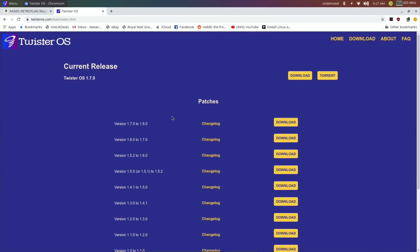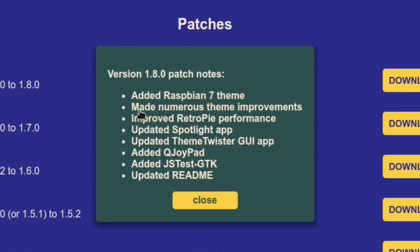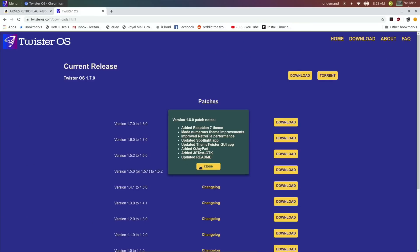My favorite OS just had an update — Twister OS has gone from 1.7 to 1.8. It added Raspbian 7, which is a Windows 7 theme, numerous theme improvements, improved RetroPie performance, an updated Spotlight search app, an updated Twister GUI app, added Q joypad for configuring your controller to work with pretty much any game, added JS test, and an updated readme.